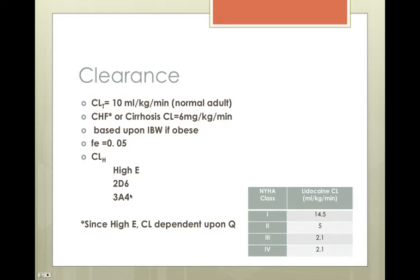The enzyme systems are 2D6 and 3A4. Since it's a high E, clearance is dependent upon Q.